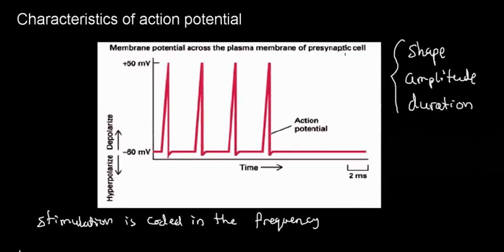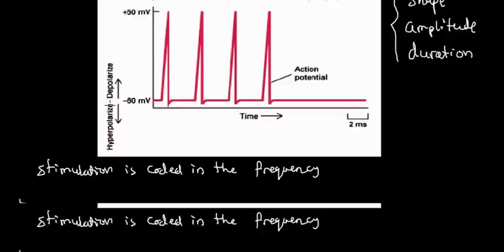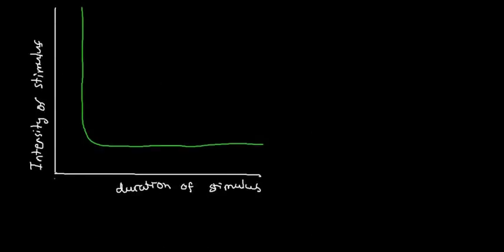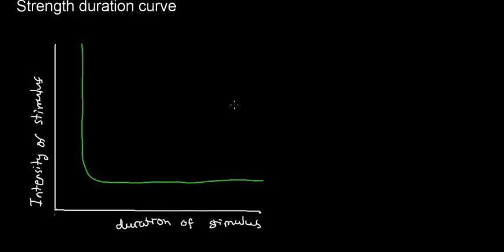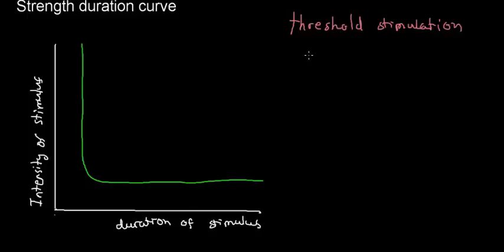These are the basic ideas: the action potential curve looks the same for every cell; the entire difference is how far apart successive action potentials are from each other. The closer they are, the more intense the stimulation. Now, when talking about stimulation, we really need to incorporate the idea of intensity and duration together.